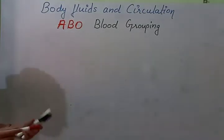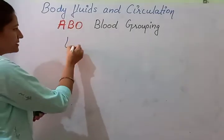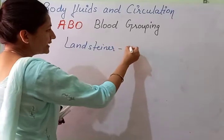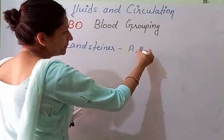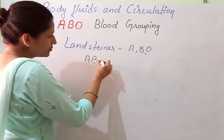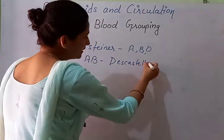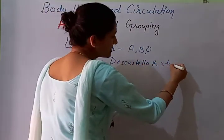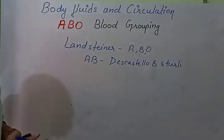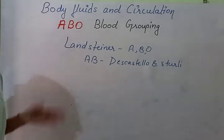This ABO blood group system was proposed by, or we can say discovered by, the scientist Landsteiner. He gave the blood groups A, B, and O. And the blood group AB was discovered by Decastello and Sturli. These are the scientists who are associated with the discovery of the ABO blood group system.